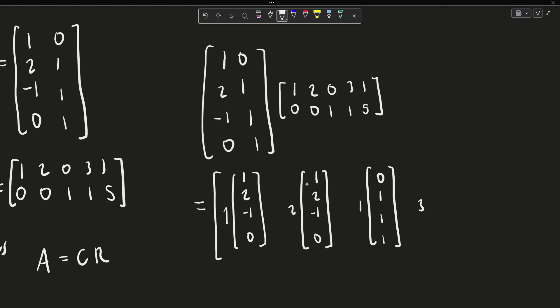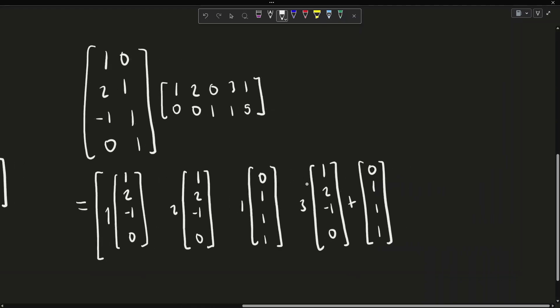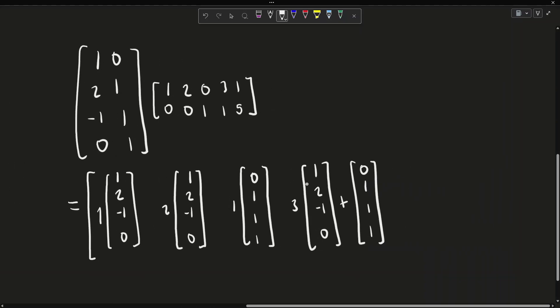The fourth entry is 3 times the first column plus 1 times the second column. And the final column is 1 times the first column plus 5 times the second column.